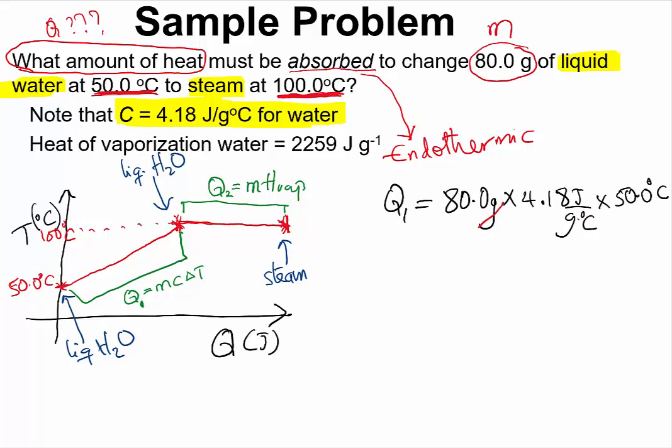Grams will cancel out. Degrees Celsius will cancel out. If you plug all of these values into your calculator, you should end up with 16,720 joules, because joules is the only unit we have left.